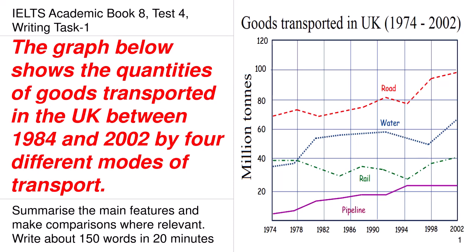Today, we are going to discuss the IELTS academic book 8 test 4, the writing task 1. The graph below shows the quantities of goods transported in the UK between 1984 and 2002 by 4 different modes of transport.